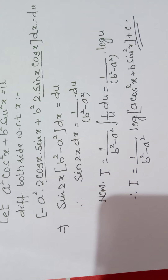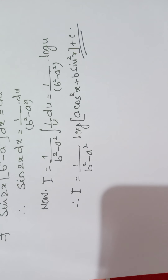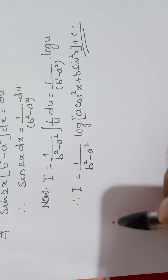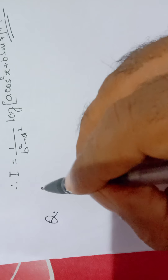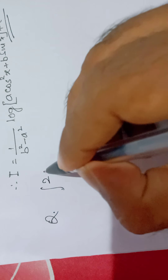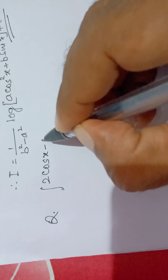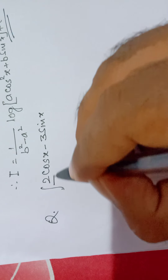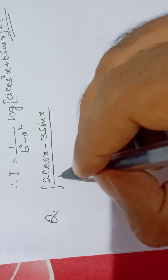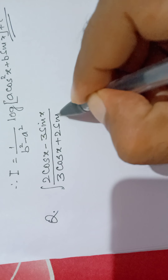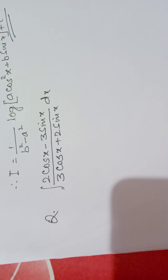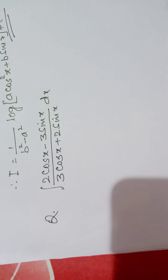These are very important questions. Now see another question: integrate (2 cos x minus 3 sin x) divided by (3 cos x plus 2 sin x). This is a very simple question — as usual, put the denominator equal to u.